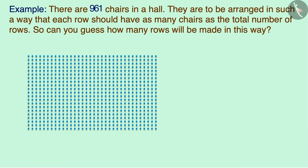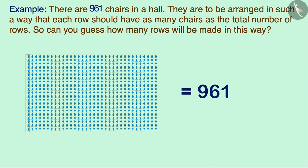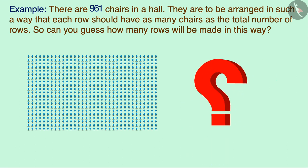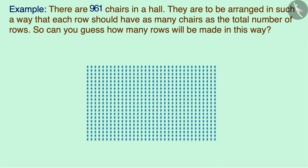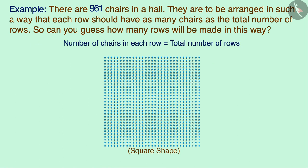Let's look at the first example. There are 961 chairs in a hall. They are to be arranged in such a way that each row should have as many chairs as the total number of rows. Can you guess how many rows will be made? Here we have to arrange 961 chairs such that each row has as many chairs as the total number of rows.